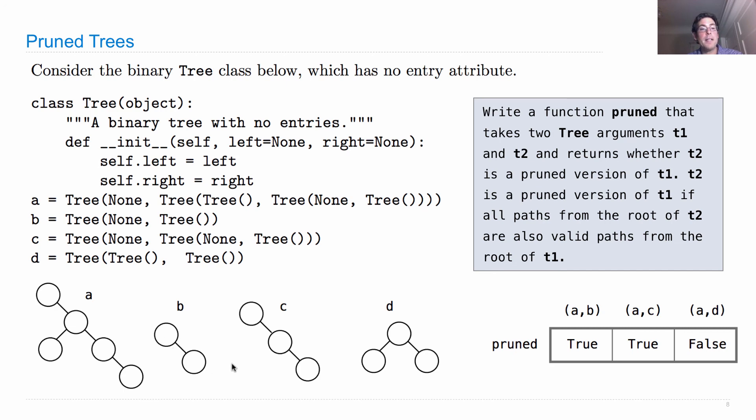So if we look at each pair of trees, A paired with some other T2, we find that B is a pruned version of A, because every path in B, namely the one that just starts here, or the one that starts here and then goes to the right to come here, also exists in A. And so there's B, just contained within the root of A.